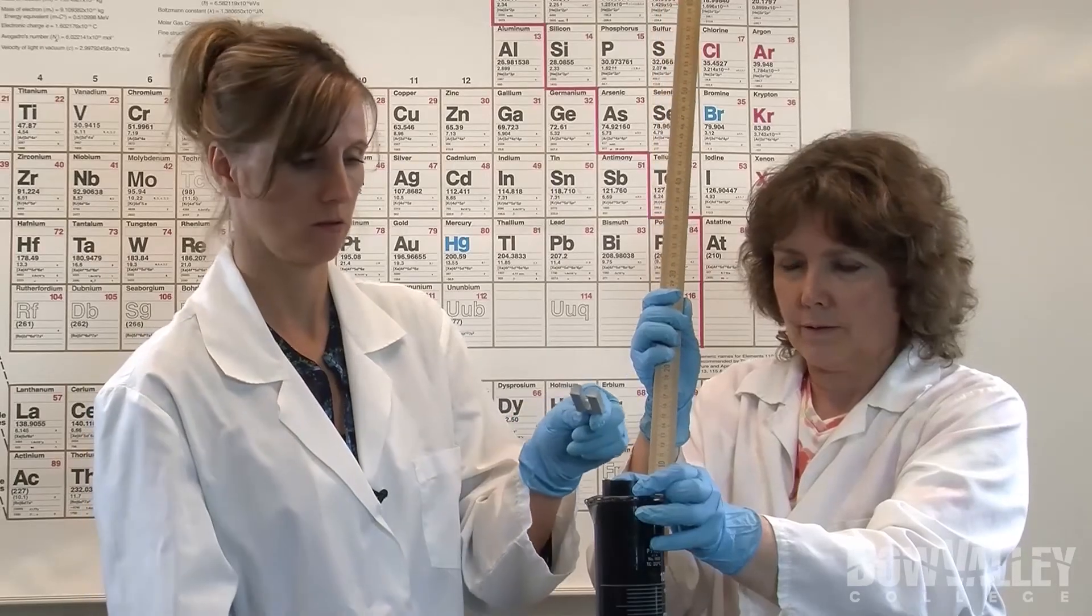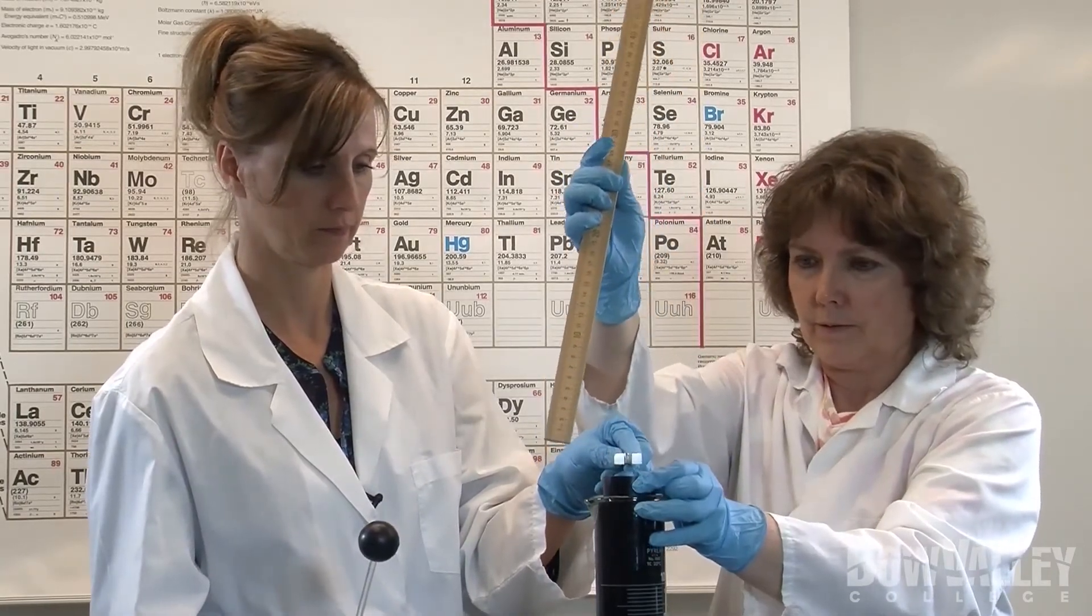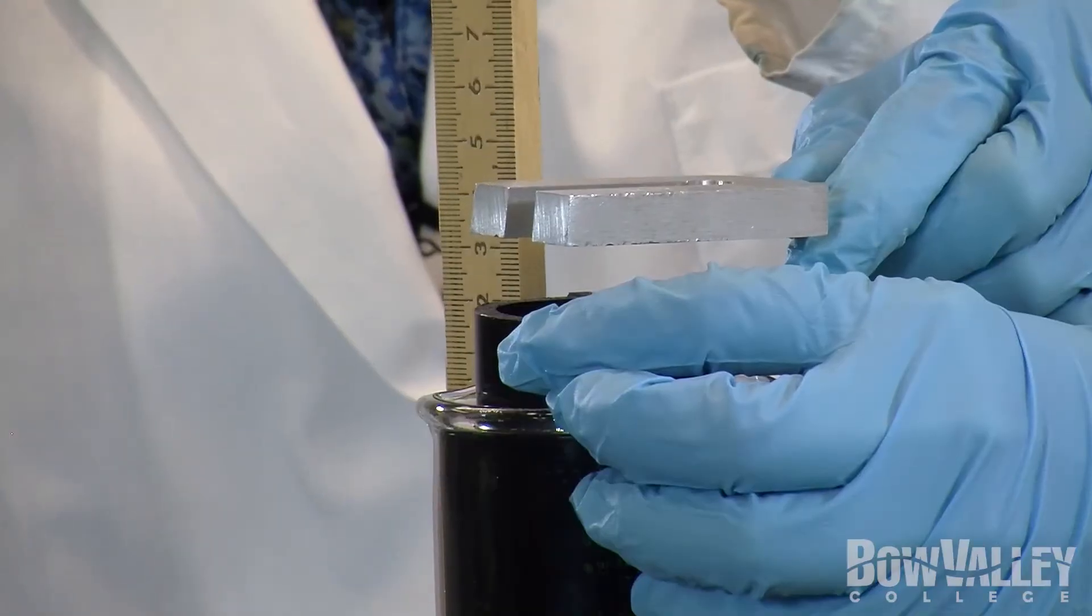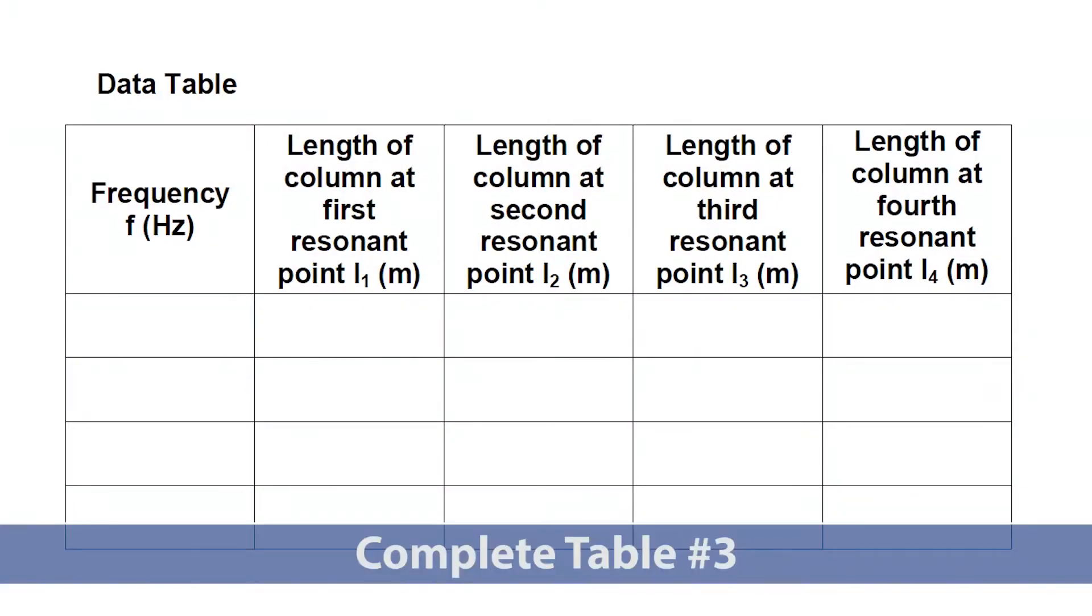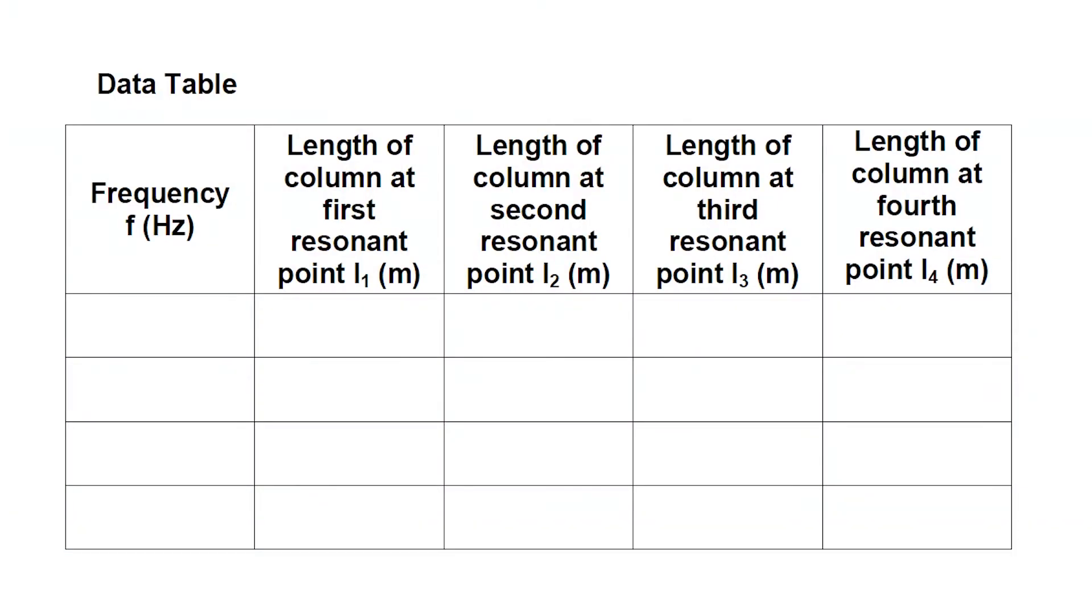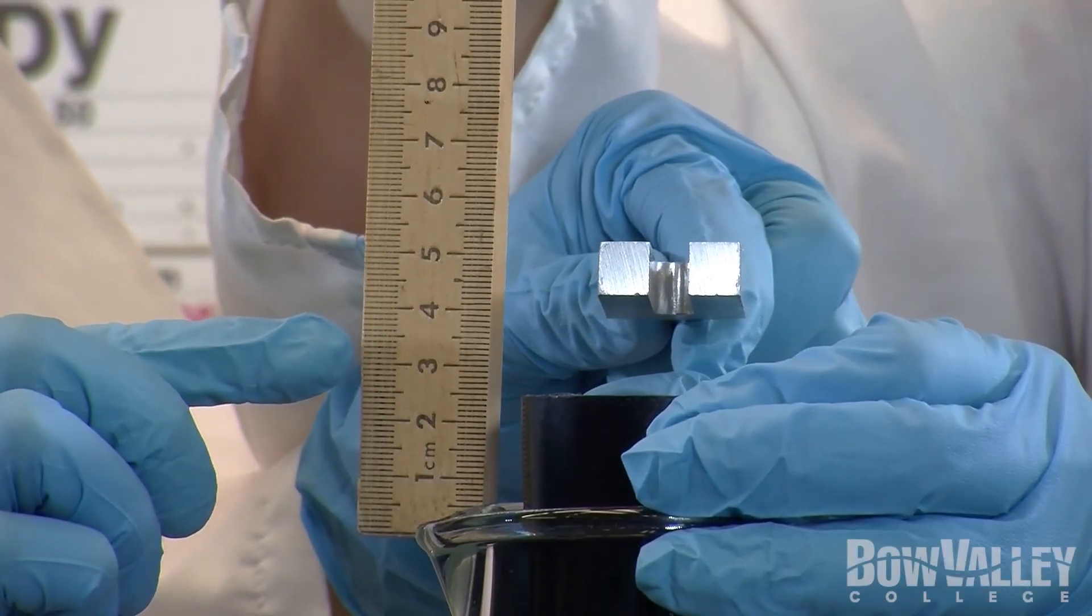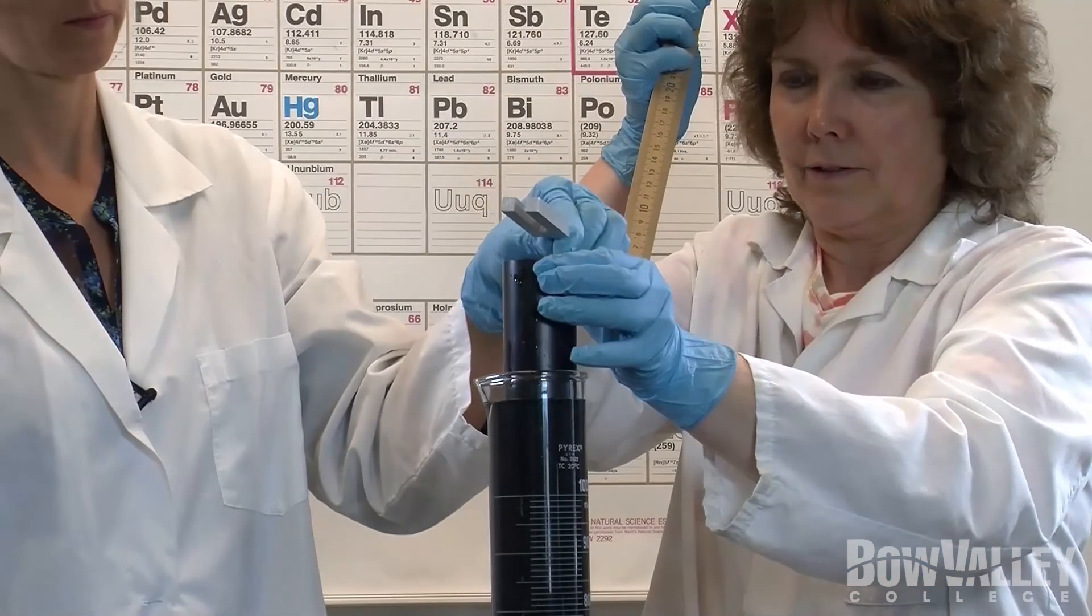Continue striking the tuning fork as many times as necessary to find the loudest resonant sound. Measure and record the length of the air column that gives the greatest resonance. Be sure to measure from the surface of the water to the location of the tuning fork.